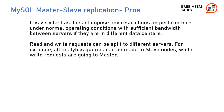For each replication type, after a short definition, I will explain pros and cons. The pros of Master-Slave Replication: it is very fast as it doesn't impose any restrictions on performance under normal operating conditions, with sufficient benefit between servers if they are in different data centers. Read and writes can be split to different servers — for example, all analytics queries can be made to slave nodes while write requests go to master.